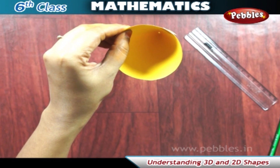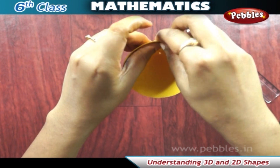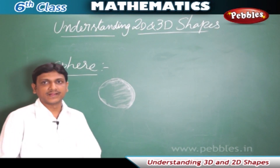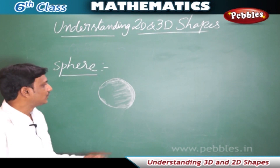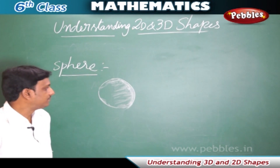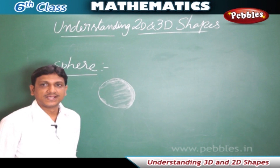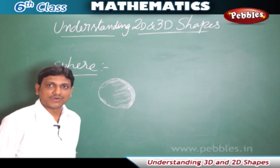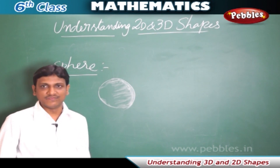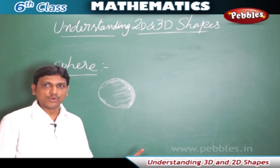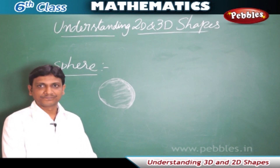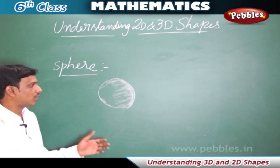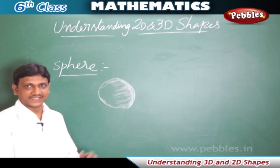The sphere is another 3D shape. In our daily life, objects like balls and laddoos are in spherical shape. Even the Earth is in a spherical shape. Spheres can roll on all sides.